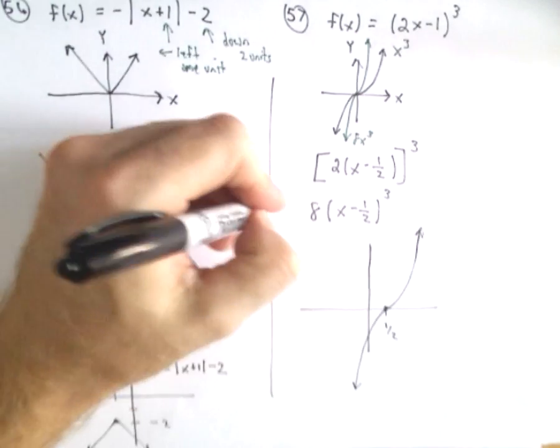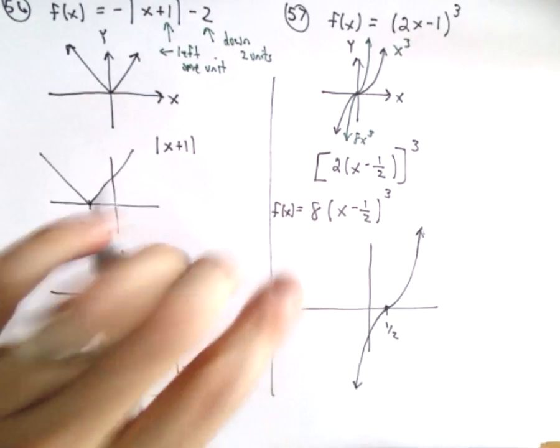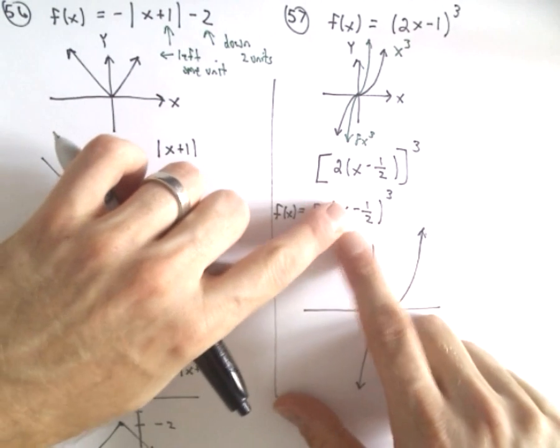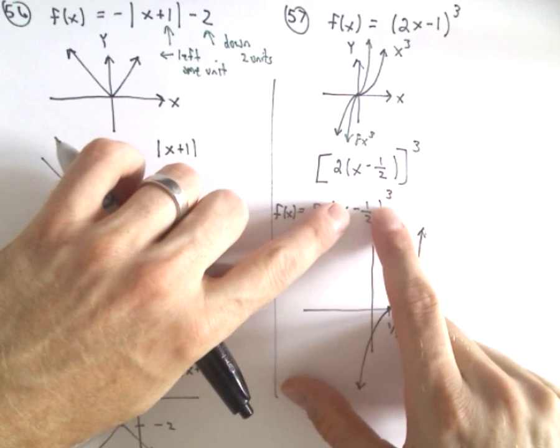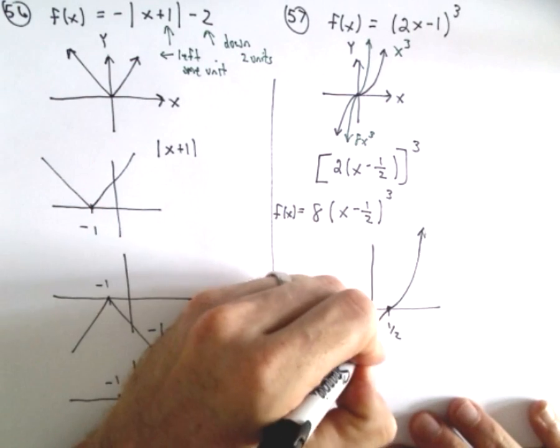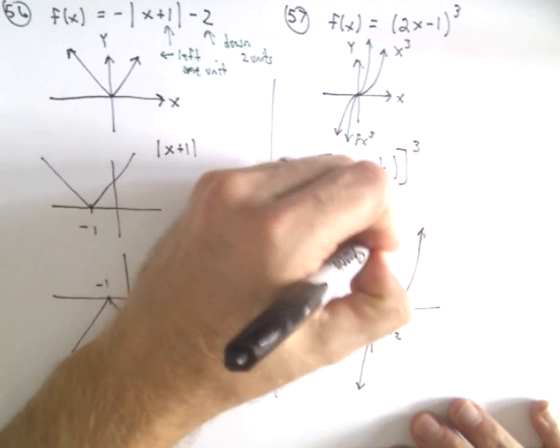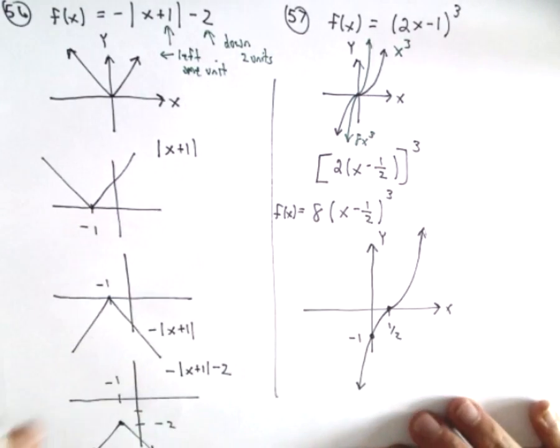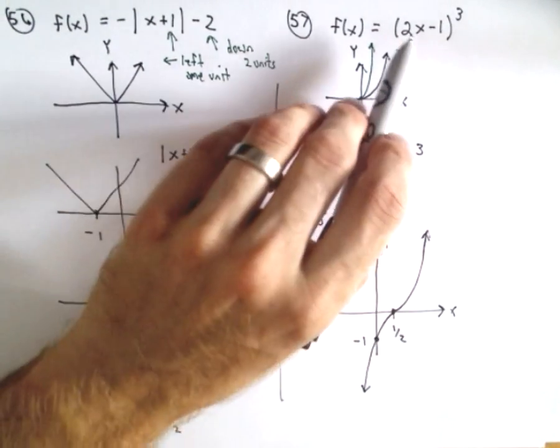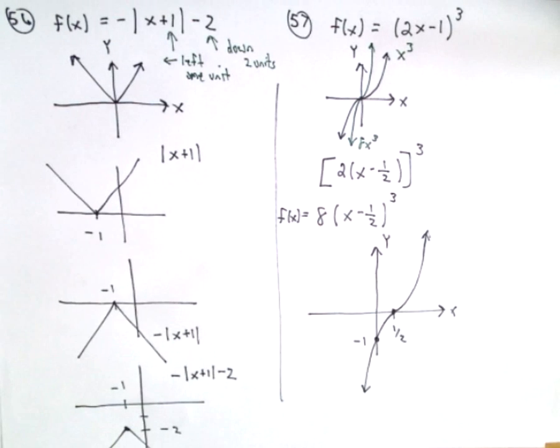We can go ahead and find the y-intercept as well. Notice if we plug in x = 0, we would have (-1/2)³, which would be -1/8, multiplied by 8. That would cross at -1. So there's a rough sketch of the function (2x - 1)³.